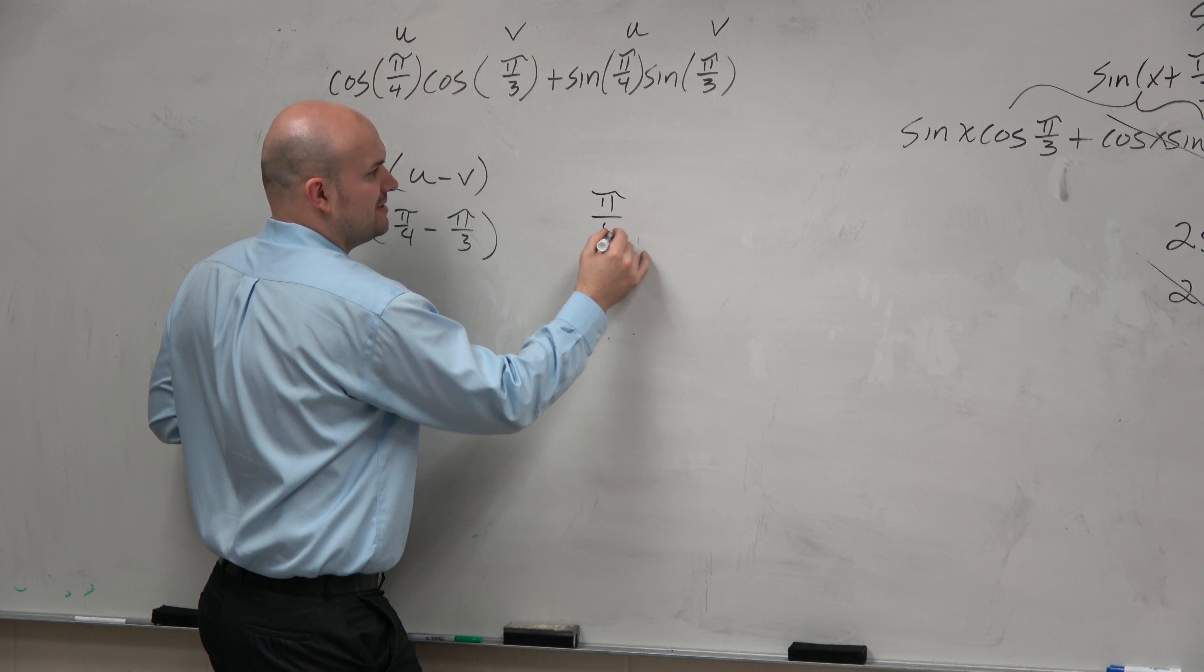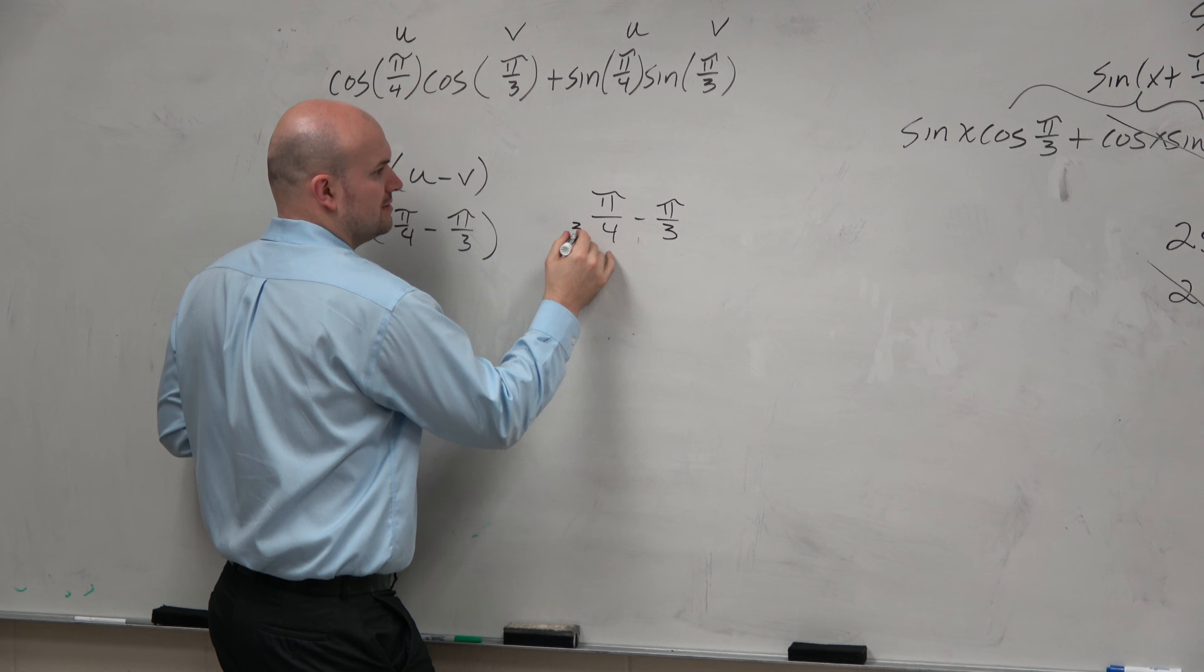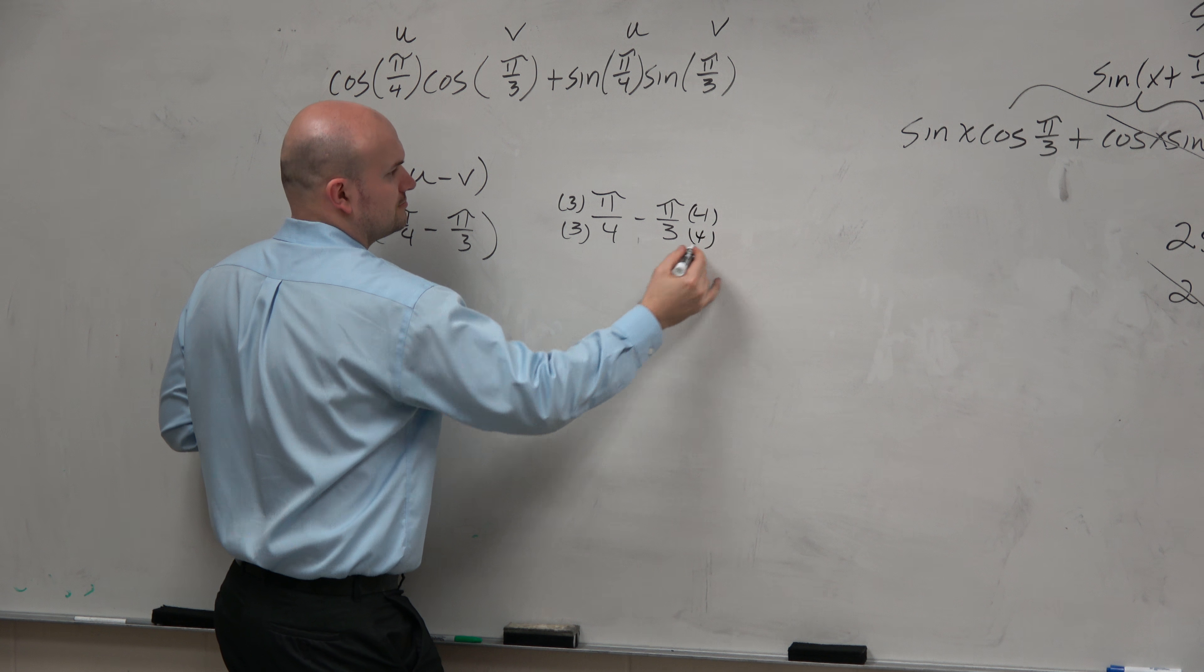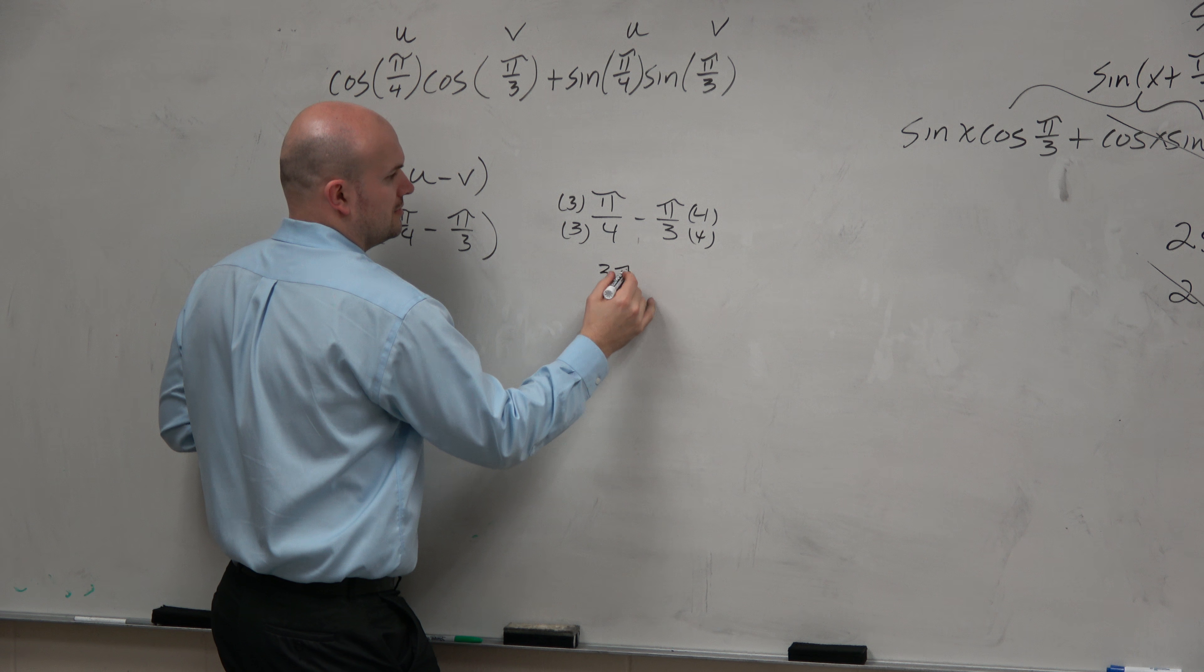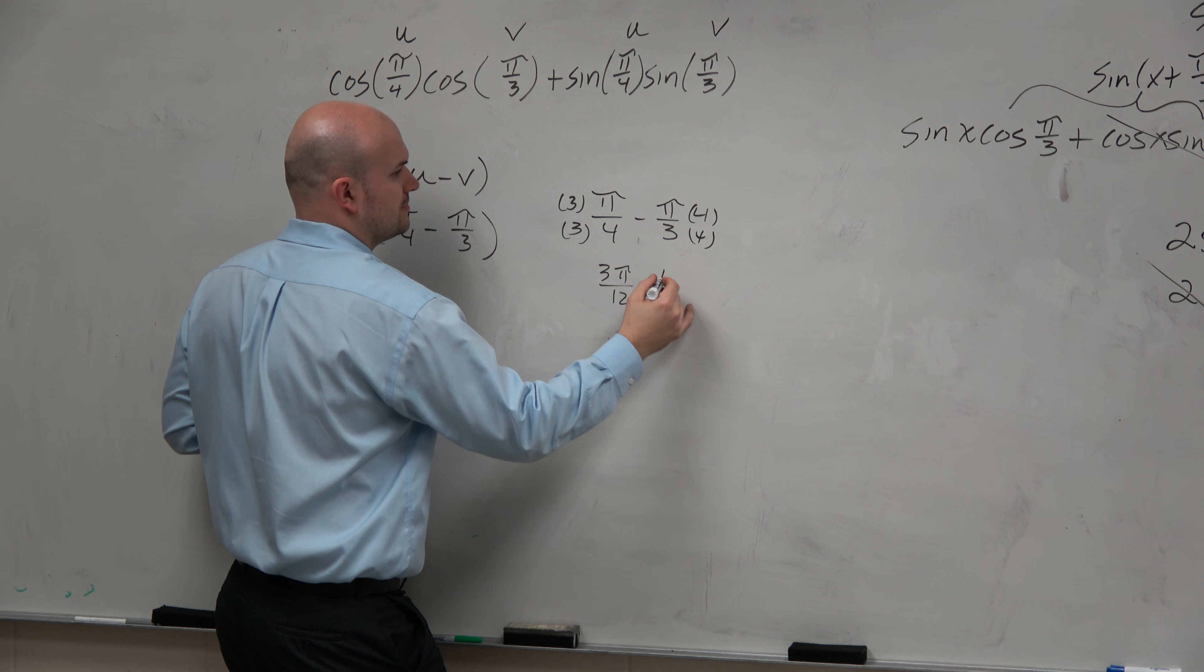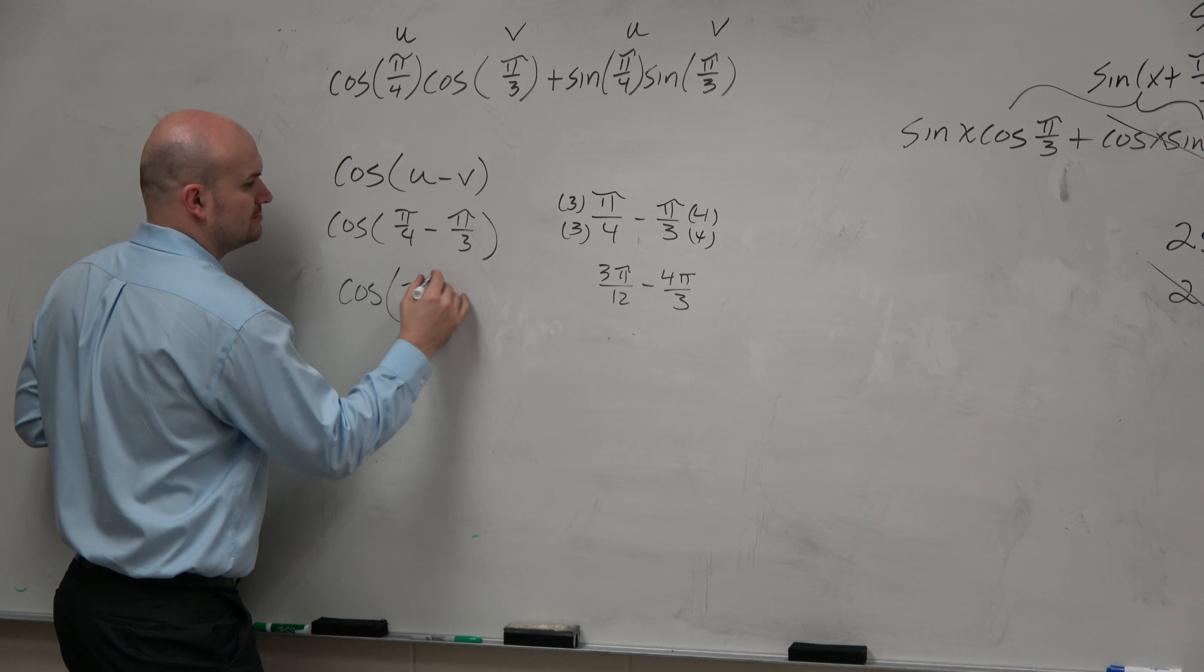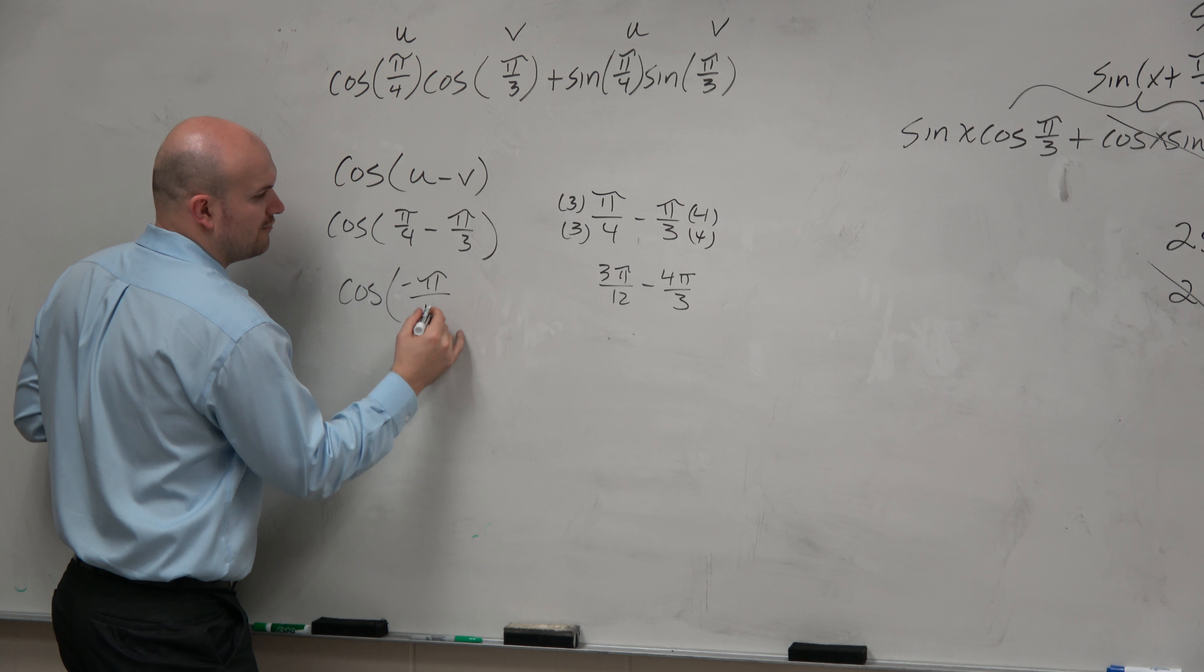Well, that's OK, because that just means we need to get common denominators. 3 over 3, 4 over 4. So therefore, the answer choice that you'd be looking for, it'd be negative pi over 12.